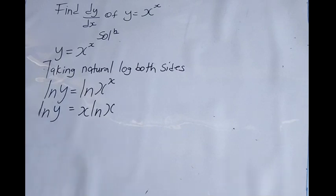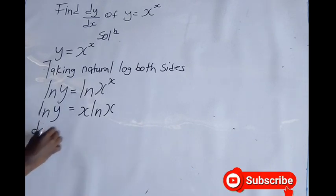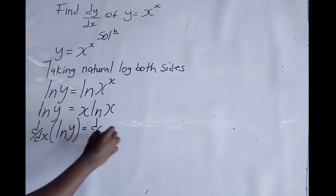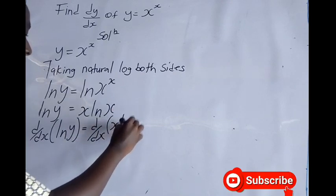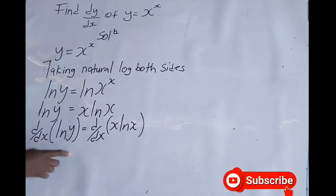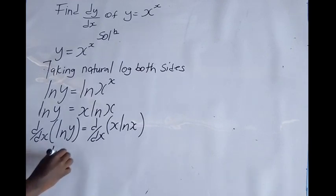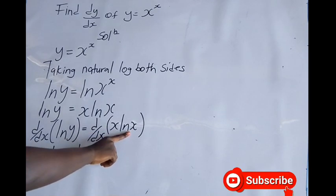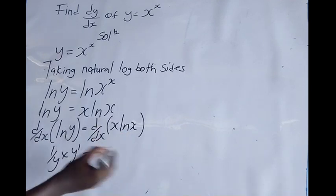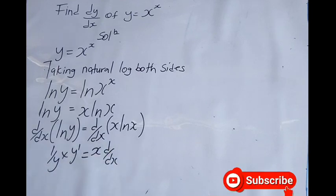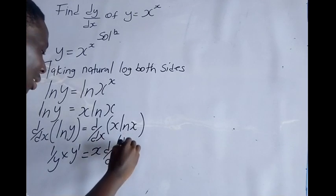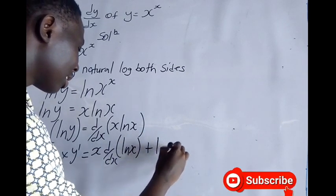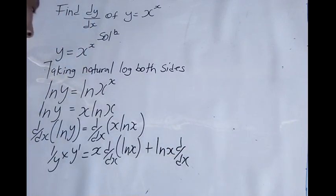Differentiating both sides, d/dx of y equals d/dx of x·ln(x). The derivative of the left side is 1 over y times dy/dx. On the right side, since we have a product, we use the product rule: x times d/dx of ln(x) plus ln(x) times d/dx of x.